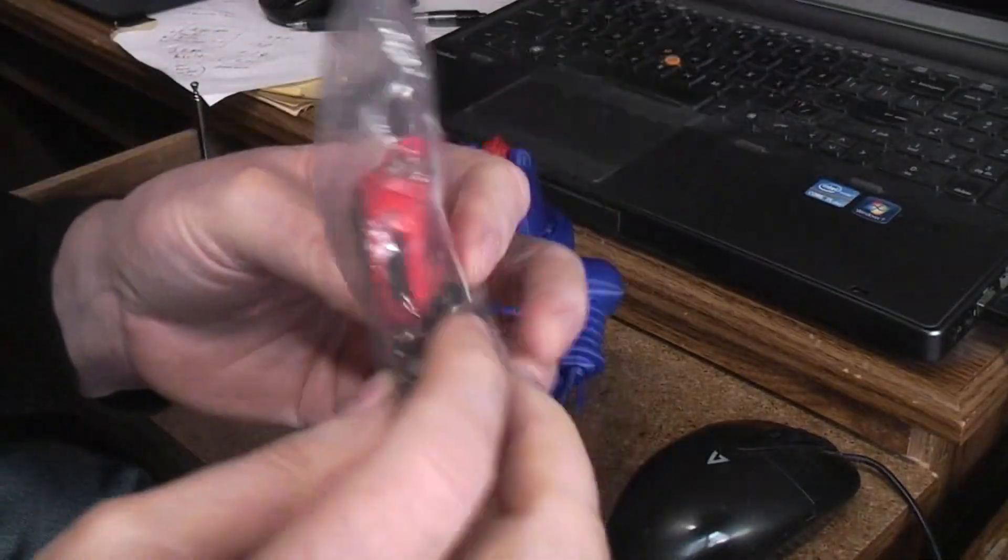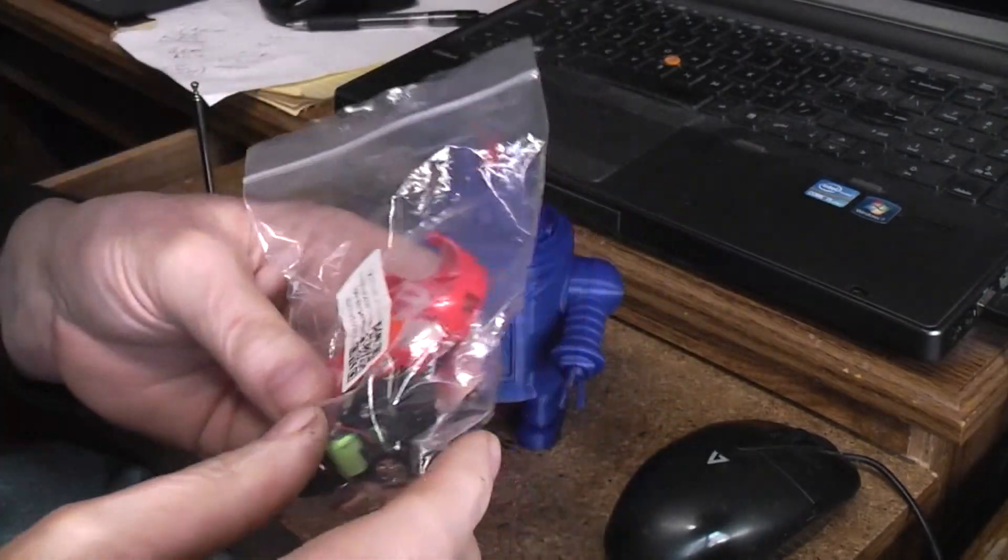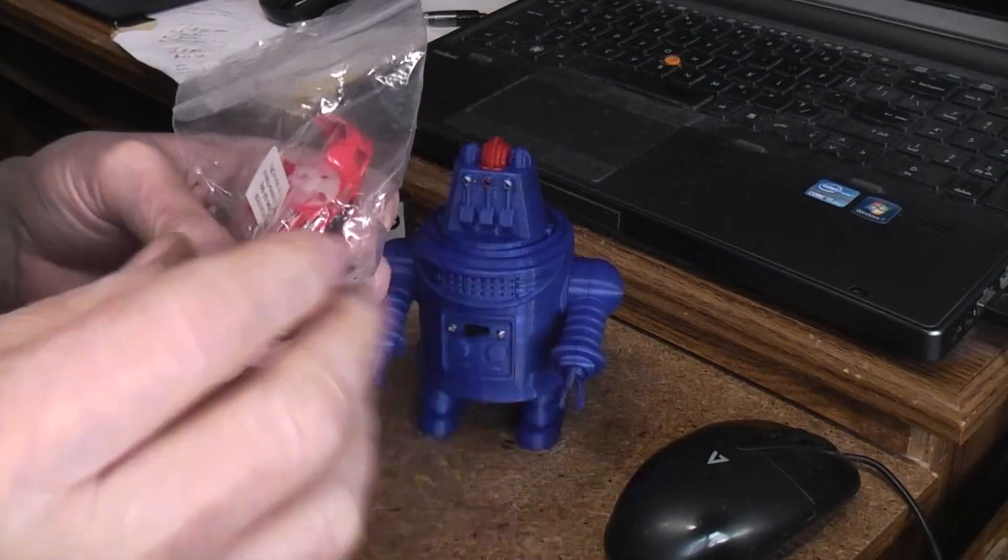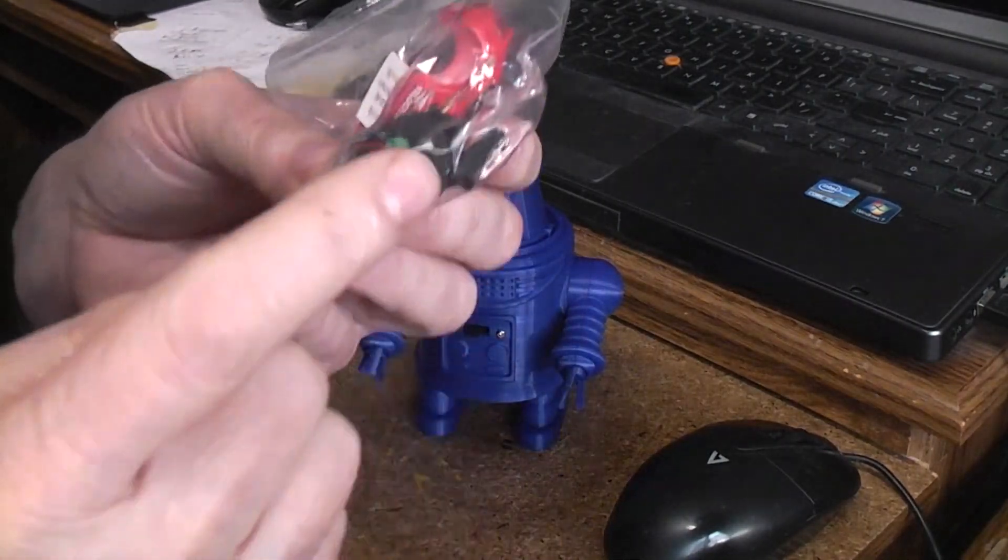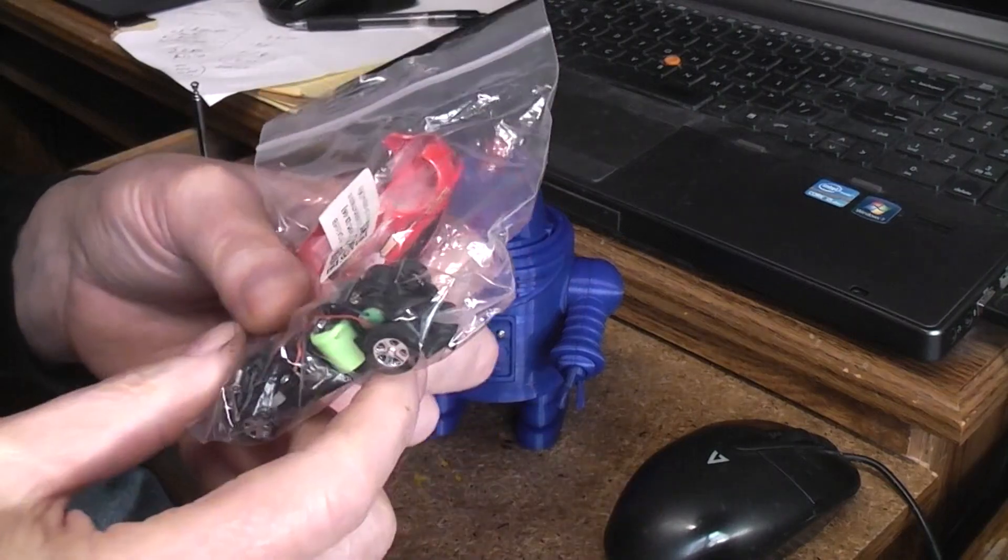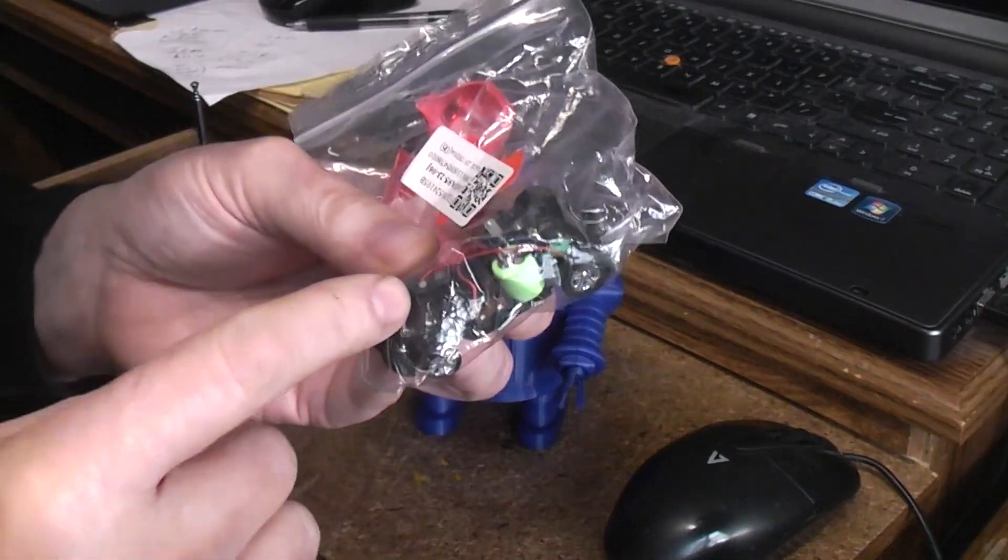The nice thing about them is the electronics that are in there are all digital so they work really well, and you can drive up to two motors forward and reverse because they have the drive wheel and the steering. Well the steering can be another motor if you want or it could be lights or sound or whatever, and they also come with lights.